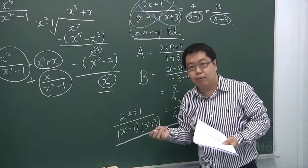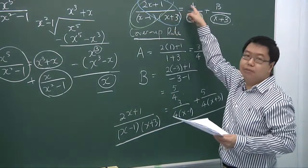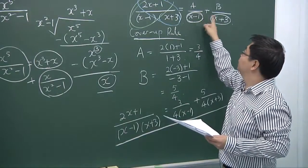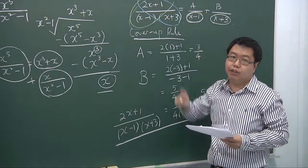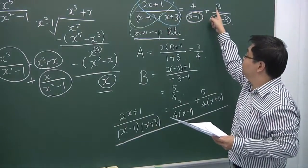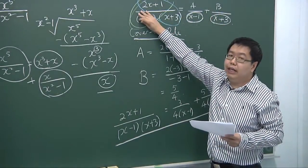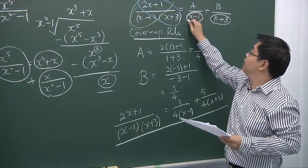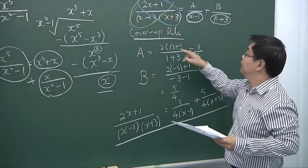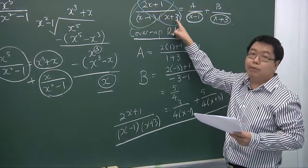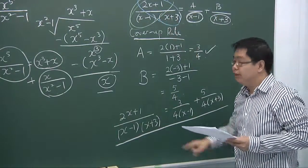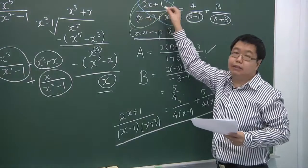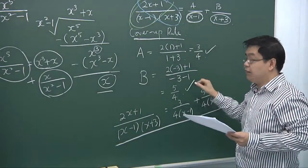Let's recap the cover-up rule. We first break the expression into two partial fractions, whose denominators match the factors in the original denominator. To find A, we cover (x minus 1) and substitute x equals 1, giving 2 times 1 plus 1 over 1 plus 3, which is 3 quarters. To find B, we cover (x plus 3) and substitute x equals minus 3, obtaining 5 over 4.